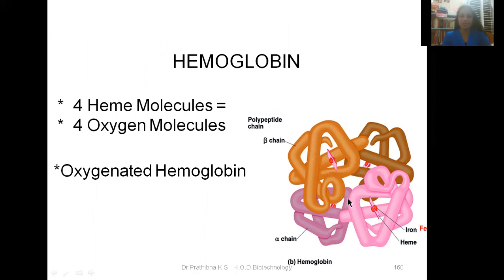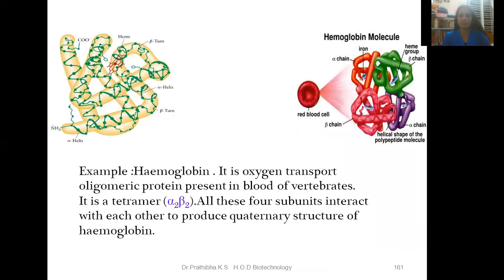In hemoglobin, each molecule carries four heme groups and therefore four oxygen molecules. When this hemoglobin molecule conjugates with oxygen, it is known as oxygenated hemoglobin. Hemoglobin is the oxygen transport oligomeric protein present in the blood of vertebrates. It is a tetramer with four polypeptide chains — two alpha chains and two beta chains. All four subunits interact with each other to produce the quaternary structure of hemoglobin.